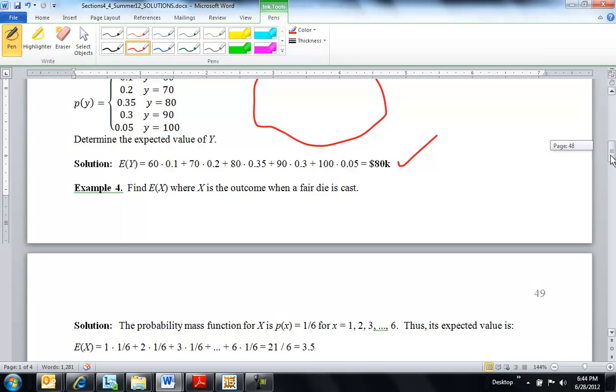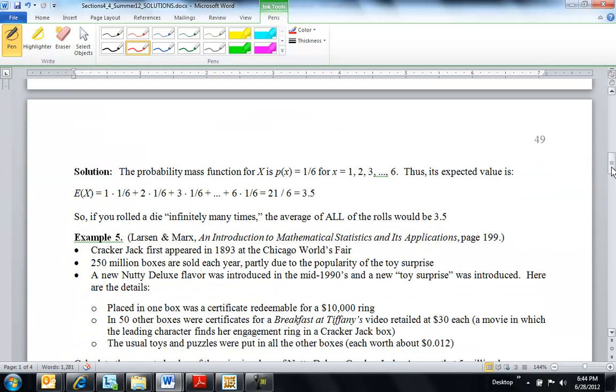What's the expected value of a fair die if you threw it a thousand times one day and averaged all the values you get? The average would be 3.5, so it's just 1 times p of 1, 2 times p of 2, 3 times p of 3.